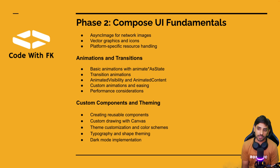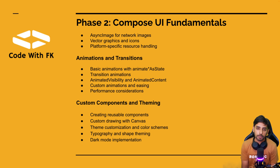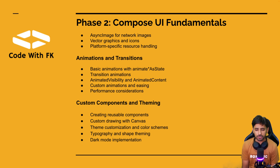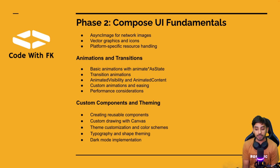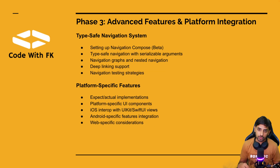We'll work on custom components and theming. I've covered many custom components in previous Android projects, and we'll revisit how to create reusable components using Canvas, handle theme customization with color schemes, support dark mode and light mode, and set typography. That wraps up phase two. Phase three begins with type-safe navigation.